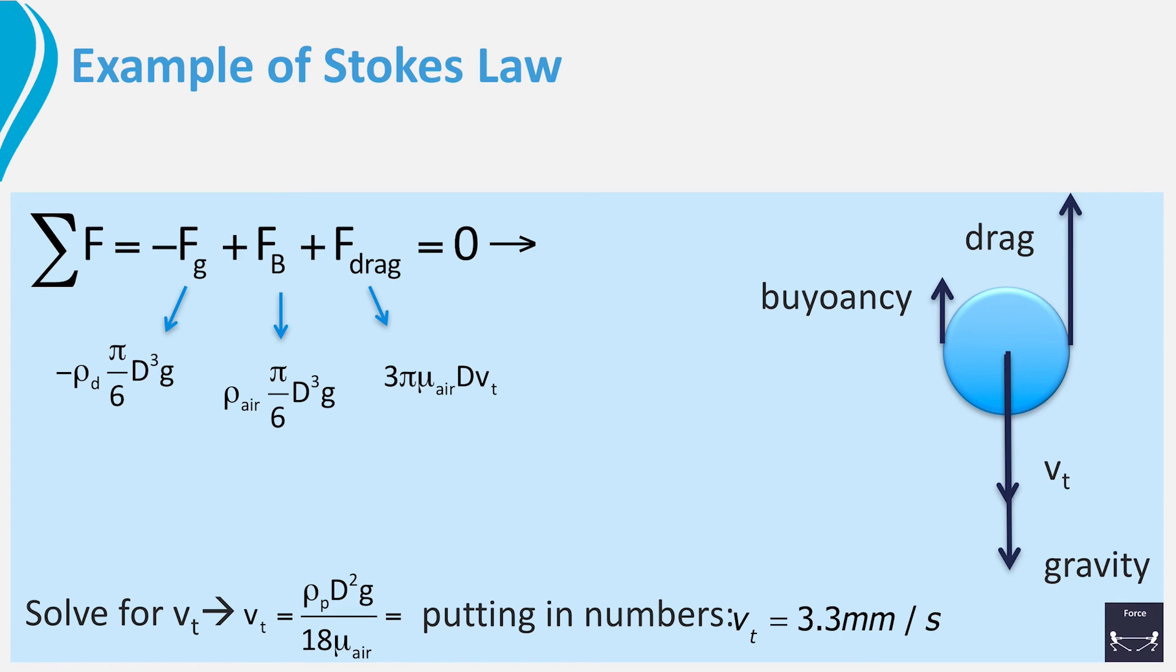We should not forget to check whether we are allowed to use Stokes law. So, we compute the Reynolds number. It is 0.016, indeed much smaller than 1, and the use of Stokes law is justified.